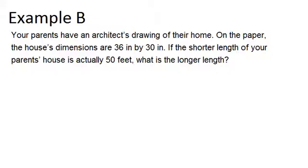Your parents have an architect's drawing of their home. On the paper, the house's dimensions are 36 inches by 30 inches. If the shorter length of your parents' house is actually 50 feet, what is the longer length? Alright, so we have this proportion that we know is true that the house is 36 by 30.